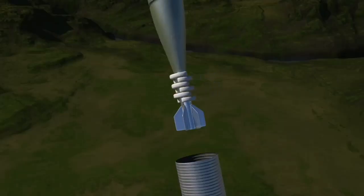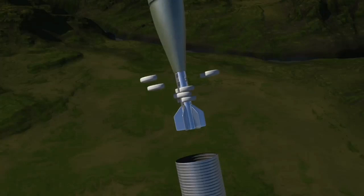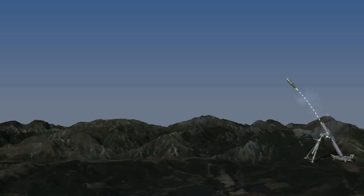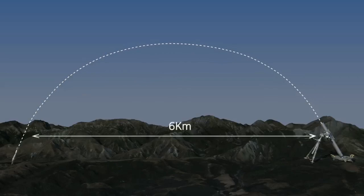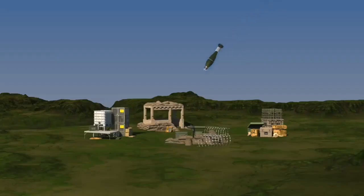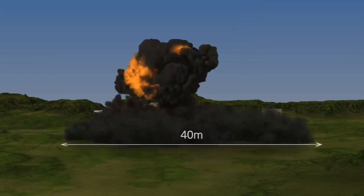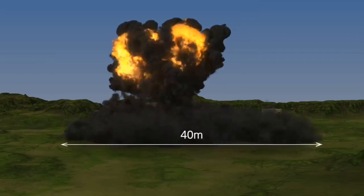The augmenting charges can be attached and detached freely. With a fewer number of augmenting charges, the explosive power and thereby the firing range will be reduced. The maximum firing range is about six kilometers when all augmenting charges are used. The 81-millimeter mortar has a casualty radius of about 40 meters.